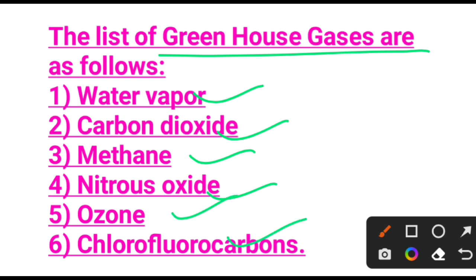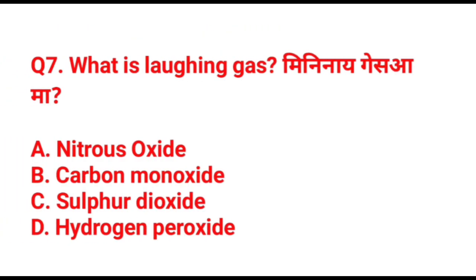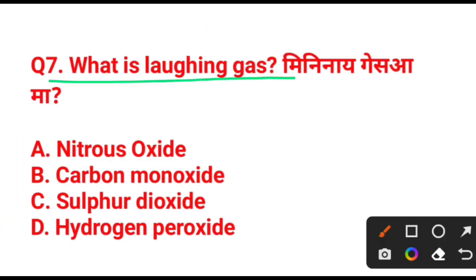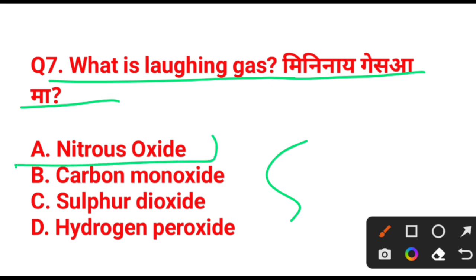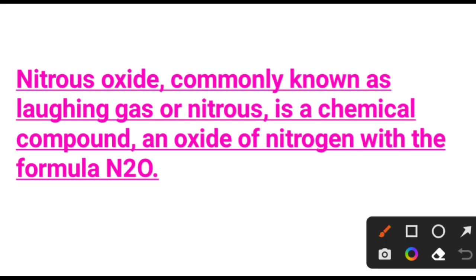Next question: what is laughing gas? There is laughing gas — the answer is nitrous oxide, option A. Nitrous oxide is called laughing gas because it produces a laughing effect. Nitrous oxide — its formula is N2O.